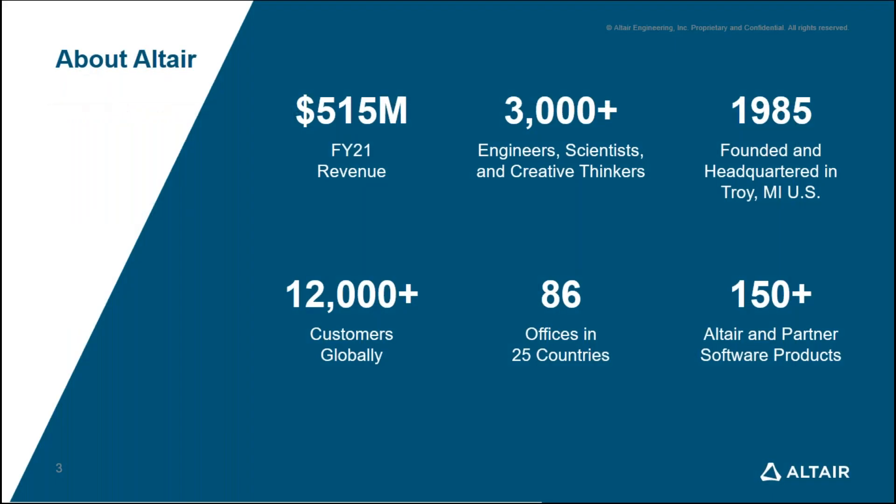About Altair: Altair started way back in 1985 — it's a 35-year-old company. Last year's revenue was 515 million dollars. The company's head office is in Detroit, USA, and currently we have 3,000 plus manpower and 12,000 plus customers globally, having 86 offices in 25 countries. In India, our head office is in Bangalore with branch offices in major metro cities. Currently Altair has 150 plus products. Most of you are aware of Altair HyperMesh, which is our flagship product. Over 35 years we have added many technologies, including various solvers catering to multi-physics simulations.